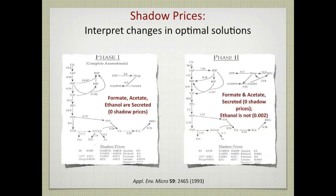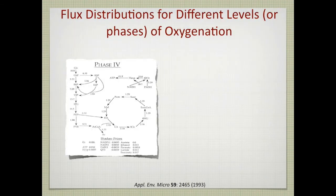Phase one covers not just fully anaerobic conditions but up to the first kink in the curve. At that kink, we move into phase two, a different metabolic state where the shadow price of ethanol is no longer zero. Ethanol now has value to the cell, so the prediction is it should not be secreted. Moving into the fourth phase, which is the second to last, we have increased the oxygen input, and only acetate has a negative shadow price and is the only one predicted to be secreted.